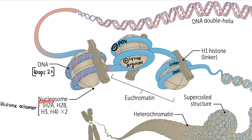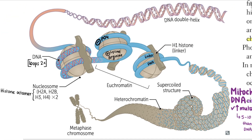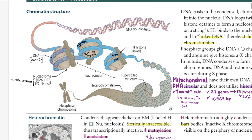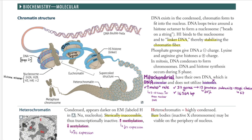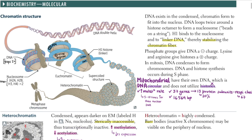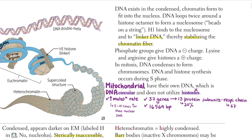The nucleosome has the histone octamer and the DNA bound with linker DNA — that cellotape. The linker DNA is the H1 histone. This is how you can read the image rather than the paragraph itself.